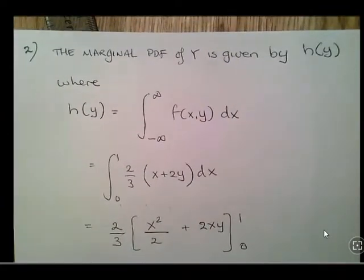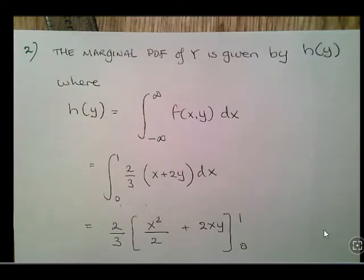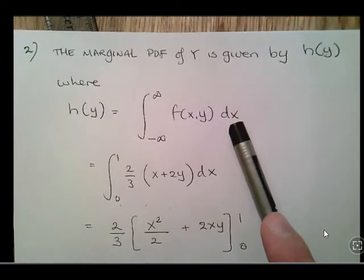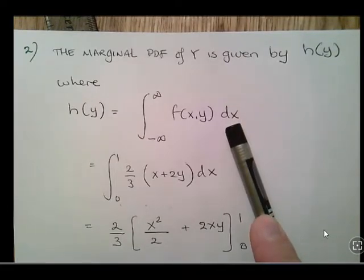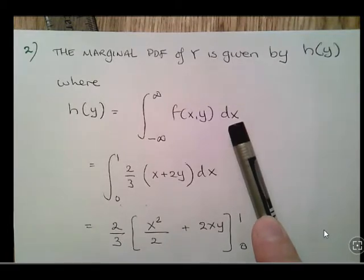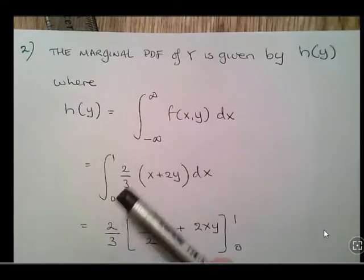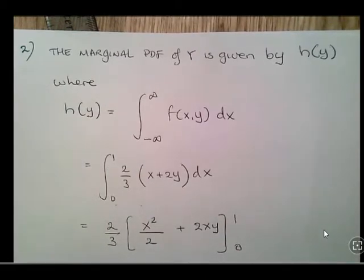The marginal PDF of y is given by h of y. So h of y equals the integral between minus infinity and infinity of the joint PDF f of x, y dx. This time we're looking for the marginal PDF of y, so we integrate with respect to x. Again, we're only interested in the interval 0 to 1, and we disregard other regions because the integral of 0 is just 0.